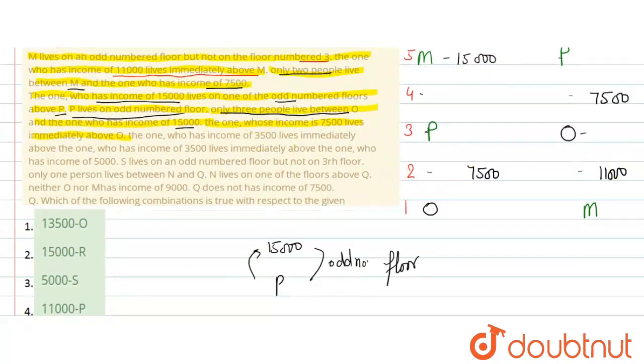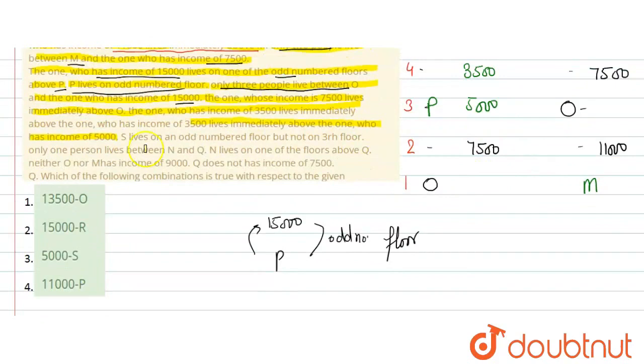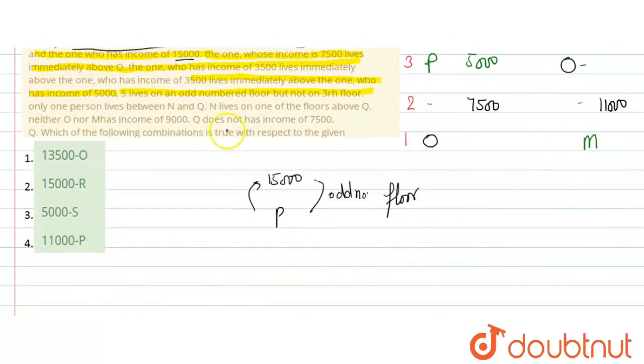The one who has income of 3500 lives immediately above the one who has income of 5000. So here 5000 comes and here 3500 comes. In this case two continuous places, here and here.